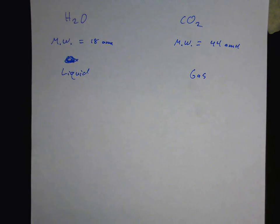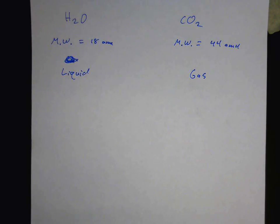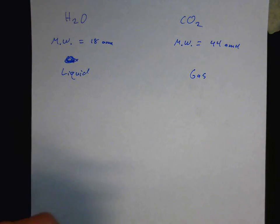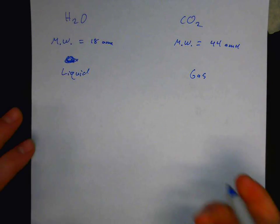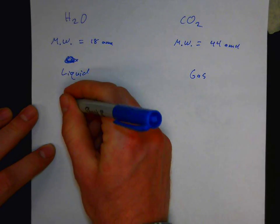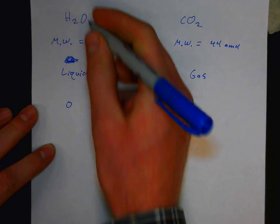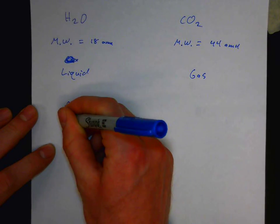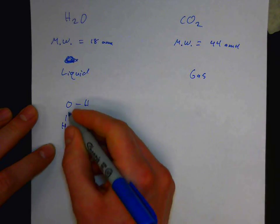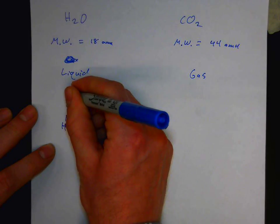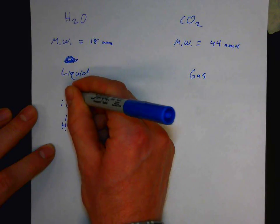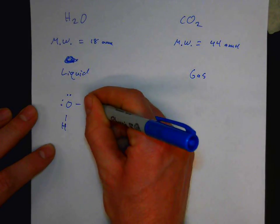The answer to this question comes from understanding the shape, structure, and polarity of these molecules. Let's step back and analyze each molecule. First, the structure: water has two hydrogens bonded to one oxygen, with two unshared pairs of electrons on the oxygen.